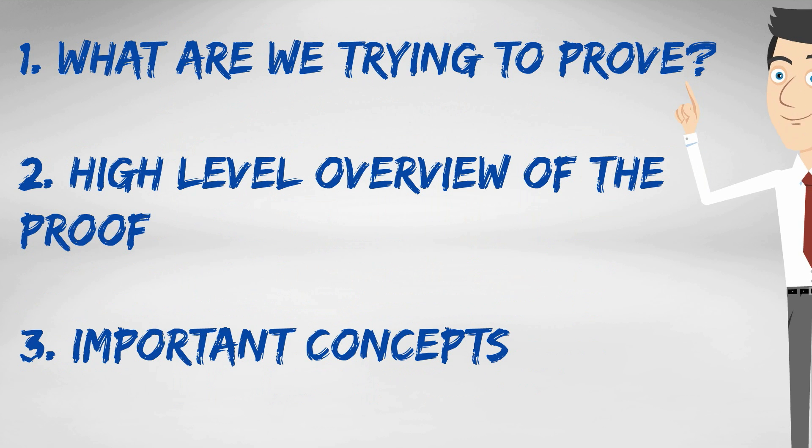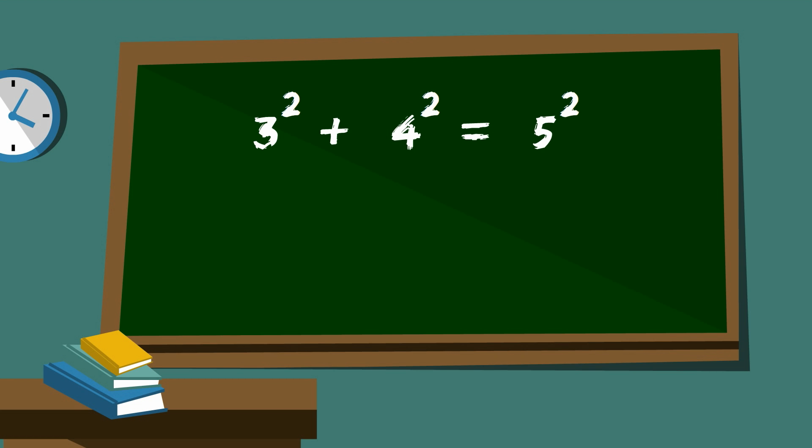So, let's start with what we are going to prove. It's very easy to find two numbers that are square numbers, that when we add them together, we get a square. For example, three squared plus four squared equals five squared.